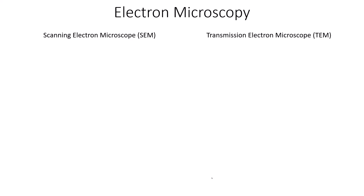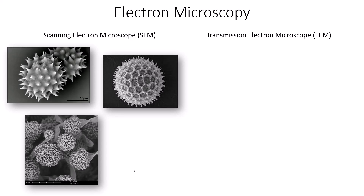Looking at some of the images these techniques produce: the scanning electron microscope scans the surface, and you can see that all of these structures are very, very small. When you look at the scale bar — this particular one is 10 micrometers — this pollen grain is about 18 micrometers in diameter. Very small, but very good magnification and resolution. The scanning electron microscope allows you to see the surface.